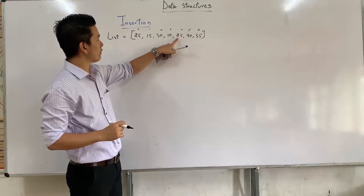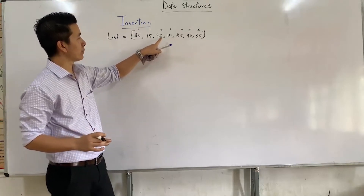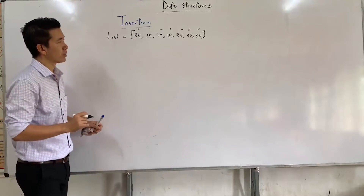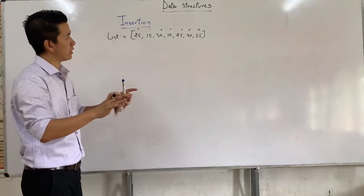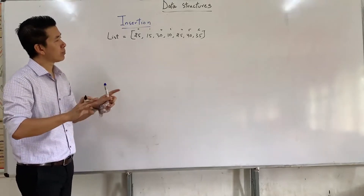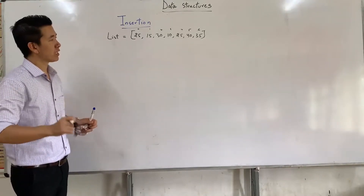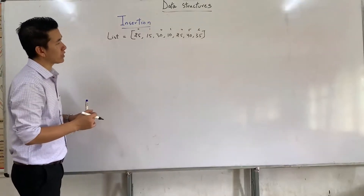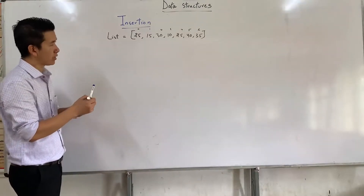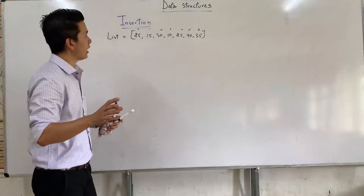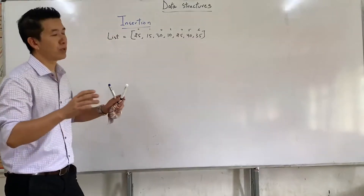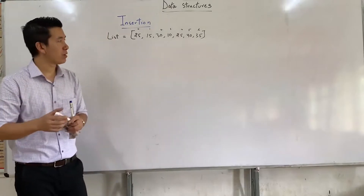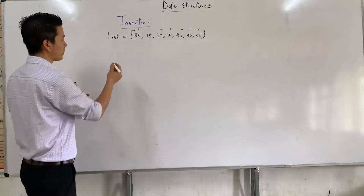For example, 25 should be before 30 — even though the example is not completely appropriate, just for illustration. So we'll write the program first. This is the brief algorithm or logic behind the insertion sort program.